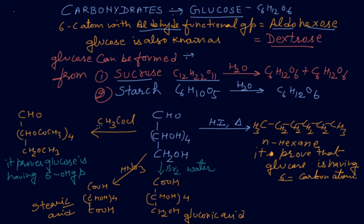All five OH groups are replaced by COCH3 groups, as I am underlining here. This proves that glucose has five OH groups. Number three: to prove that glucose has a carbonyl group, you react glucose with bromine water or nitric acid.